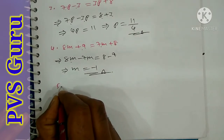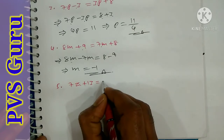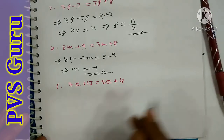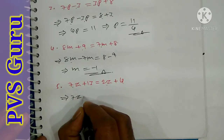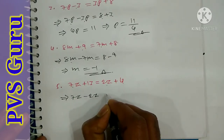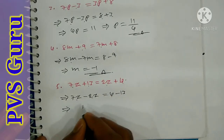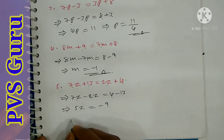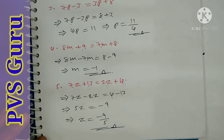Question number 5: 7z plus 13 is equal to 2z plus 4. Take 2z to the left side and 13 to the right side. 7z minus 2z is 5z. 4 minus 13 is minus 9. So z is equal to minus 9 by 5.